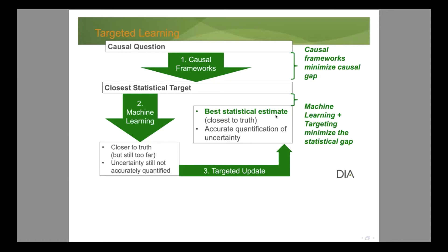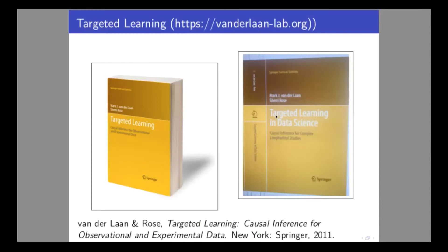You can see here all these ingredients coming together. Targeted learning started with an initial paper in 2006. Before that, we were already doing super learning and machine learning cross-validation results. By now there has been a lot of work done, and in particular two books have been written on the topic — one in 2011 and recently in 2018, 'Targeted Learning in Data Science,' with many contributions from people working in this area.